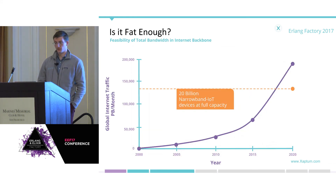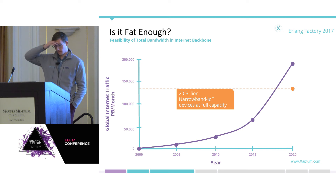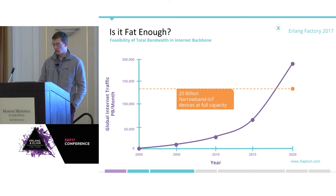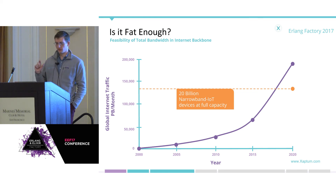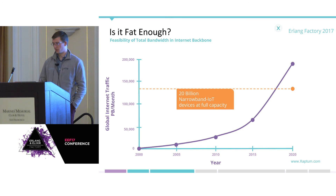Similarly for total bandwidth — is the internet core fat enough? This chart shows total internet traffic in petabytes per month for the past 15 years, with Cisco projections forward to 2020. They project almost 200,000 petabytes per month of total traffic by 2020. With a projected 20 billion IoT devices at that point, if all of them were using their full narrowband IoT capacity of 10 kilobits per second, that would only be 137,000 petabytes per month of traffic — well within the scale of where the internet backbone is growing.